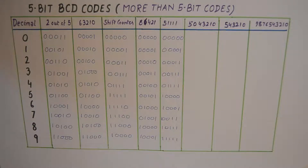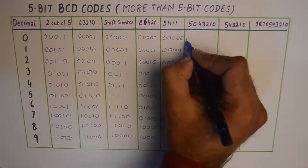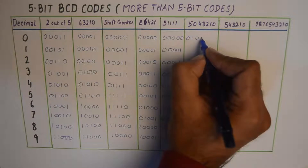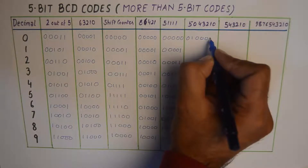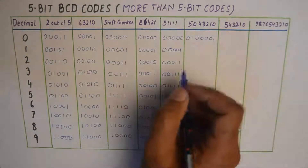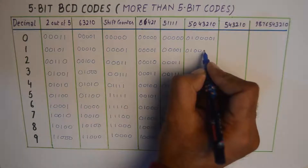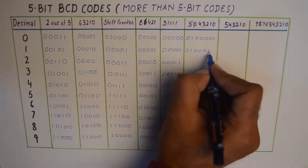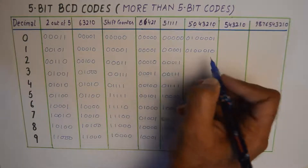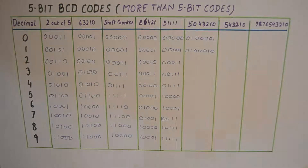Then we have more than 5-bit codes. The first in line is the 5-0-4-3-2-1-0 code, where 0 will have a 1 at the positions where the weight is 0, and you simply put a 1 at the weight's position to get the decimal number.